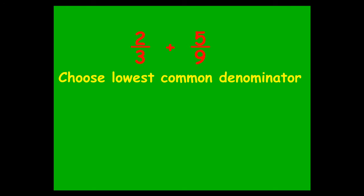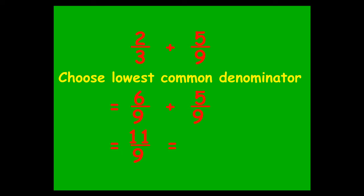Two thirds plus five ninths — the lowest common denominator is nine. Scale two thirds up by multiplying top and bottom by three to get six ninths. Five ninths is already good to go. You end up with an answer of eleven over nine, and you can't leave that as your final answer. Think of it as eleven divided by nine, which is one remainder two, so your final answer is one and two ninths.